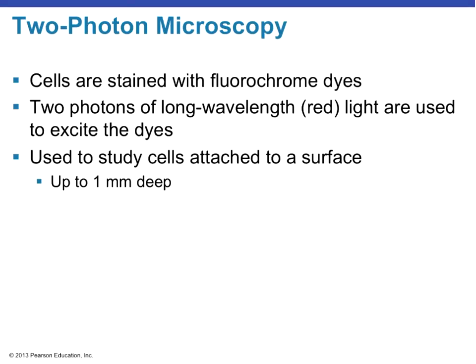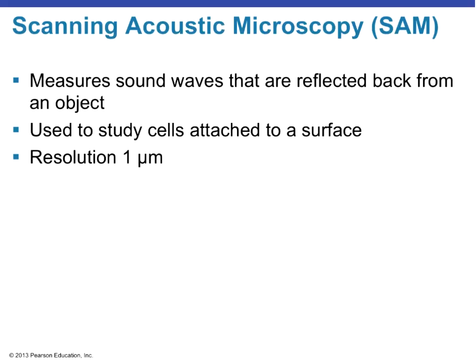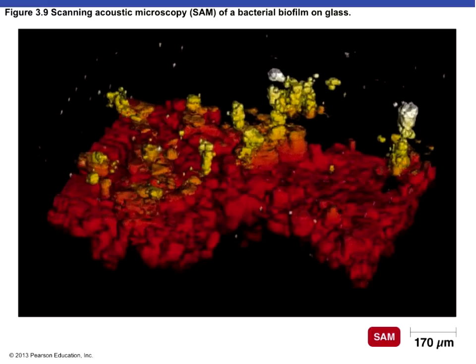Two-photon microscopy also uses fluorochrome dyes, where two photons of long-wavelength light excite the dyes to study cells on a surface. It has a resolution of one micrometer, meaning anything less than one micrometer apart can be distinguished.